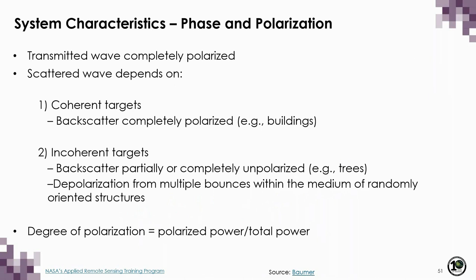The wave transmitted to the target is always fully polarized, but what we receive back depends on the characteristics of the target. We can define two types of targets: coherent and incoherent. Backscatter from a coherent target is completely polarized — examples include buildings. Backscatter from incoherent targets can be partially or completely unpolarized; most natural surfaces fall into this category, including trees made up of randomly oriented elements like leaves, needles, trunks, and stalks, resulting in waves that vary in phase and amplitude. The degree of polarization is the ratio of polarized power to total received power.